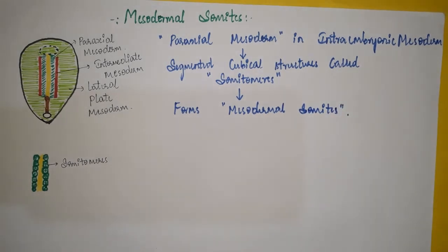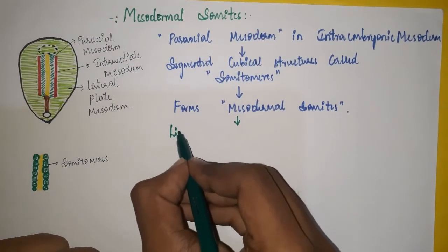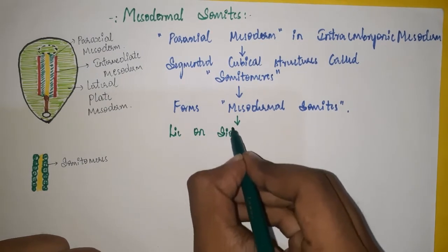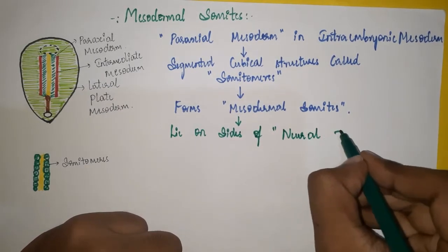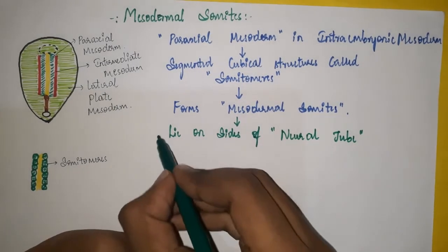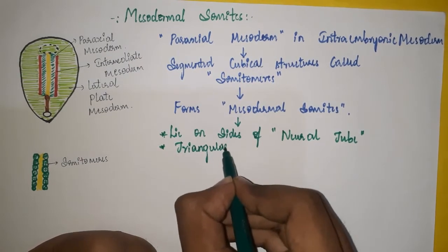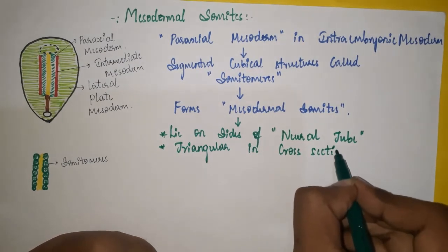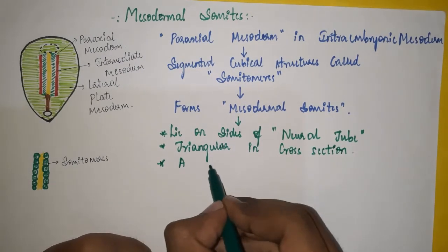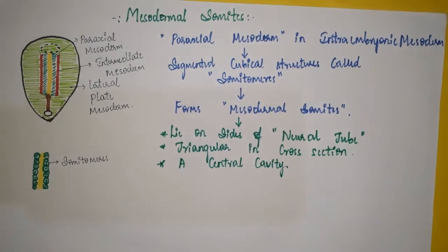The mesodermal somites lie on both sides of the neural tube. They are triangular in cross section and they have a central cavity. That is the introduction; now I will discuss the further modifications in the mesodermal somites.